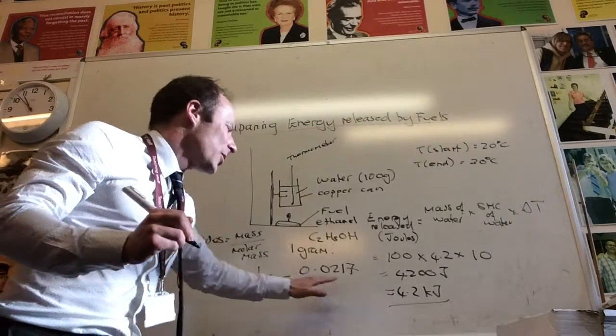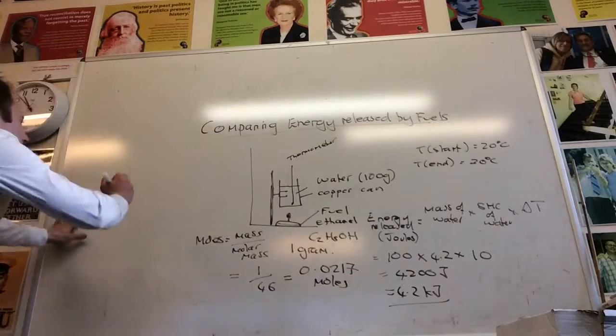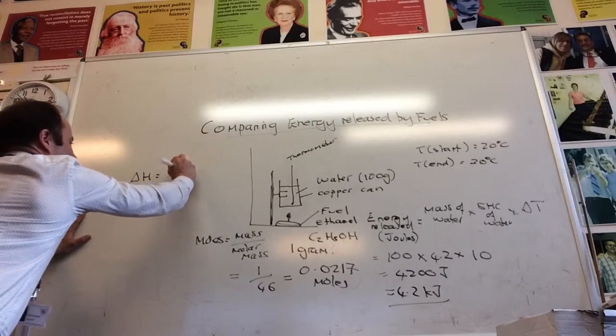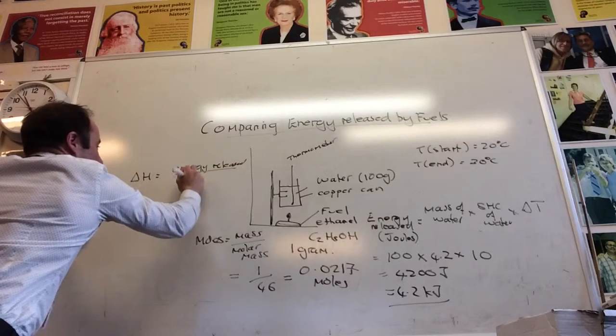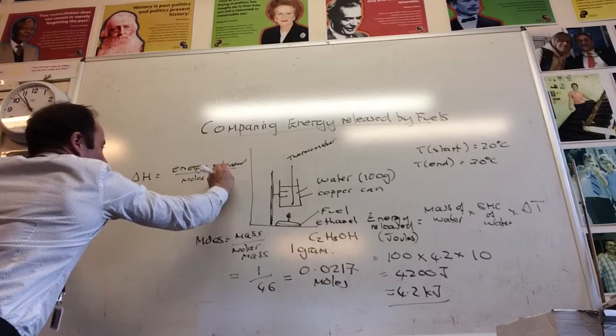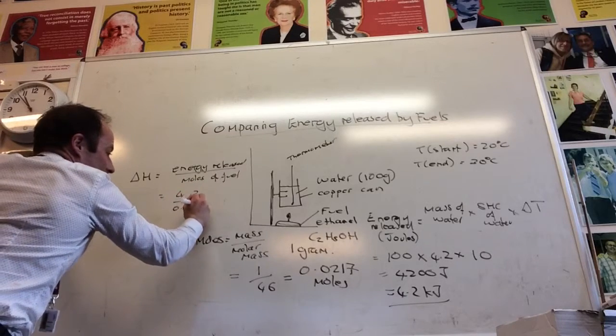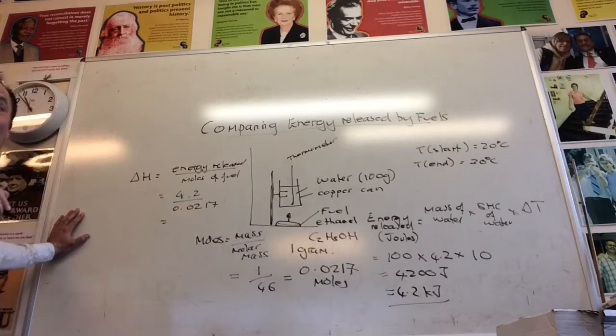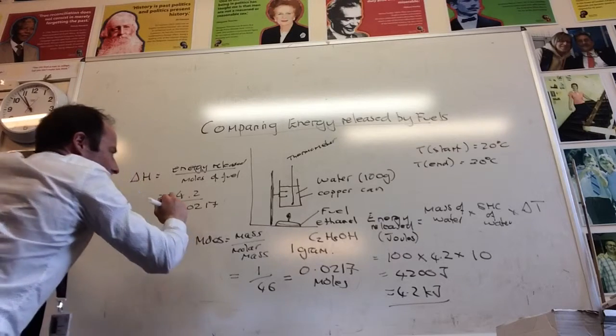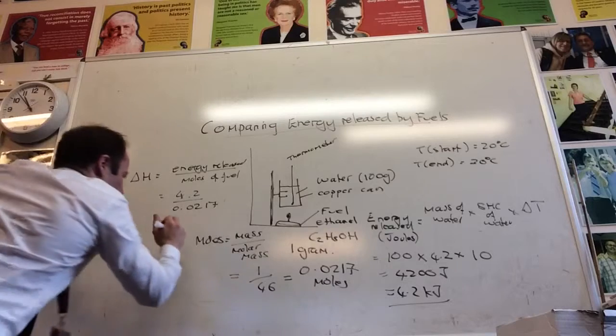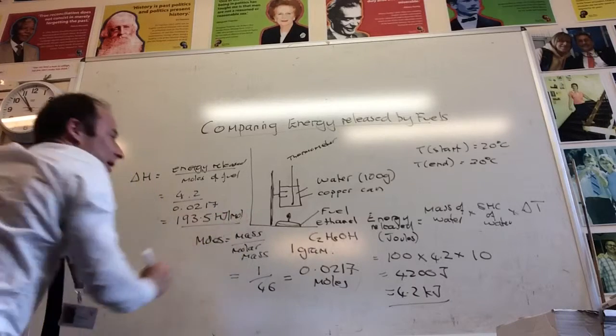So that's the moles of ethanol that I burn. So how can I convert these two figures into delta H? Divide the 4.2 by the 0.0217. Yeah, so delta H is energy released divided by moles of fuel that we burn. So energy released is 4.2, the moles of fuel burn was 0.0217, and so that comes to 4.2 divided by 0.0217, which is 193.5 kilojoules per mole. So that's your answer.